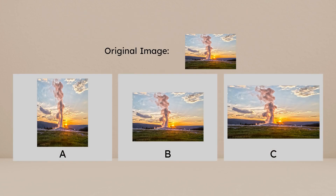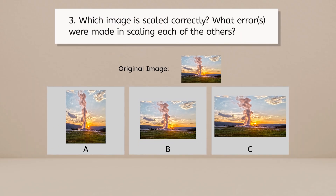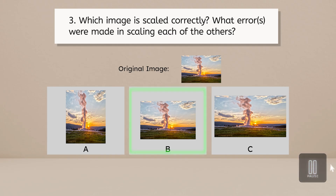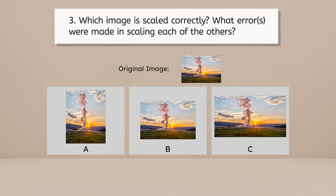Have you heard of Old Faithful? It's a famous geyser in Yellowstone National Park. I found this small picture online and I need to make it larger. Which of these images did I scale up correctly? Pause and record your observations in your notes. Image B is the correctly scaled image because it was scaled both vertically and horizontally. Image A was only scaled vertically. And look at image C — it was scaled both horizontally and vertically, but it was scaled way more horizontally. The adjustments need to be equal in both directions to be properly scaled.